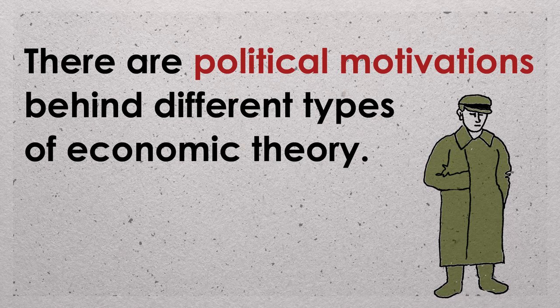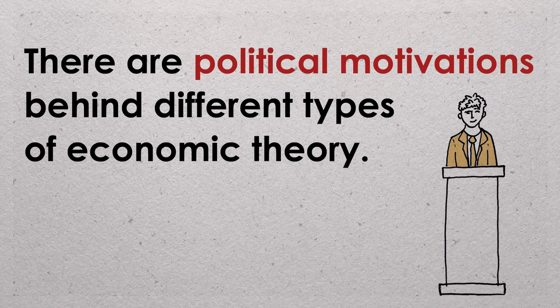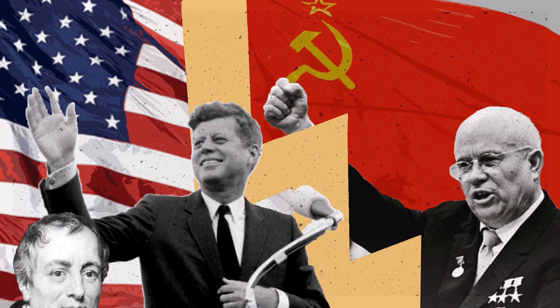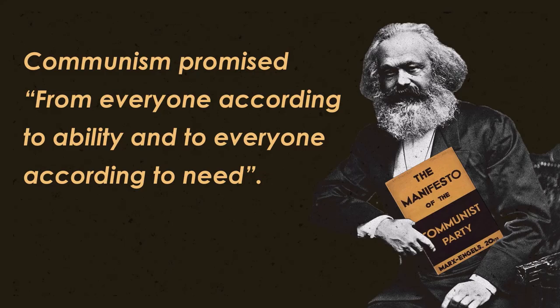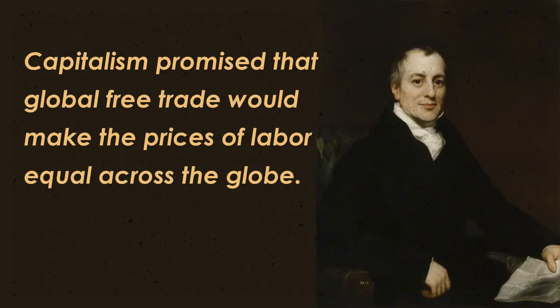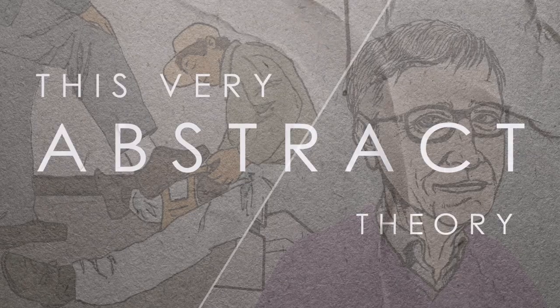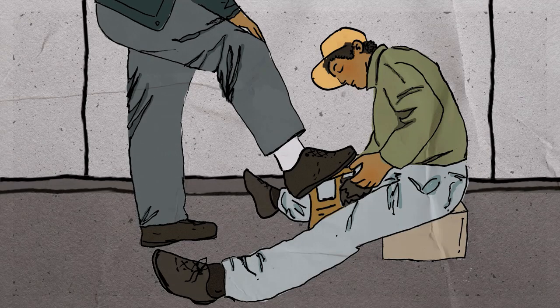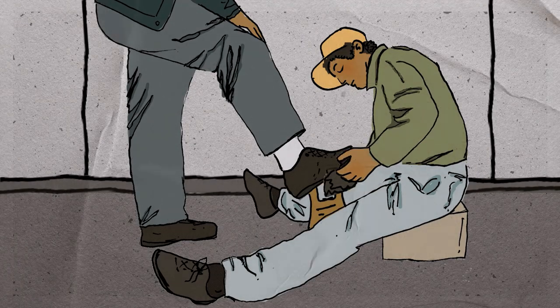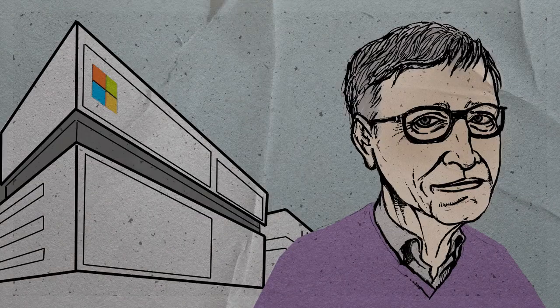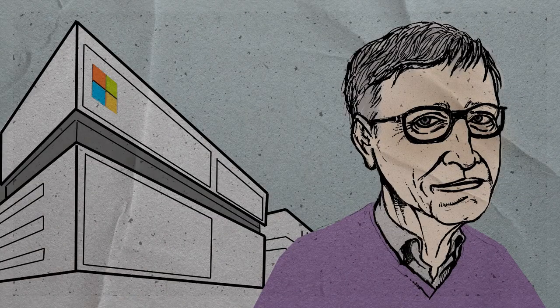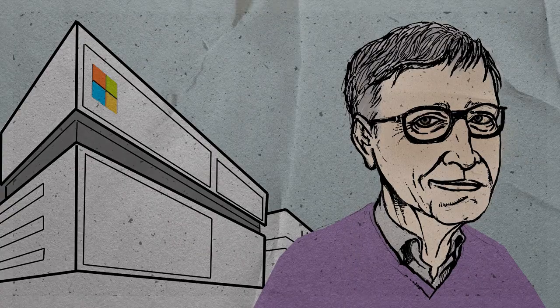There are political motivations behind different types of economic theory. Ricardo's theories only became popular again with the Cold War. When communism promised 'from everyone according to ability and to everyone according to need,' capitalism, armed with Ricardo's trade theory, could promise that the prices of labor would tend to become the same globally. This very abstract theory assumed that the market facing a young shoeshine boy was the same as the market faced by Microsoft and Bill Gates.